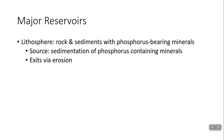The reservoirs in the phosphorus cycle mostly involve the rock cycle. A major reservoir is the lithosphere — rocks and sediments containing phosphorus-containing minerals. The source of these phosphorus-containing molecules is sedimentation: something heavy in phosphorus falls to the ground or the bottom of a body of water, forms sedimentary rock, and enters the rock cycle. The source of phosphorus for other parts of the cycle is erosion of these rocks, making it a very slow process.